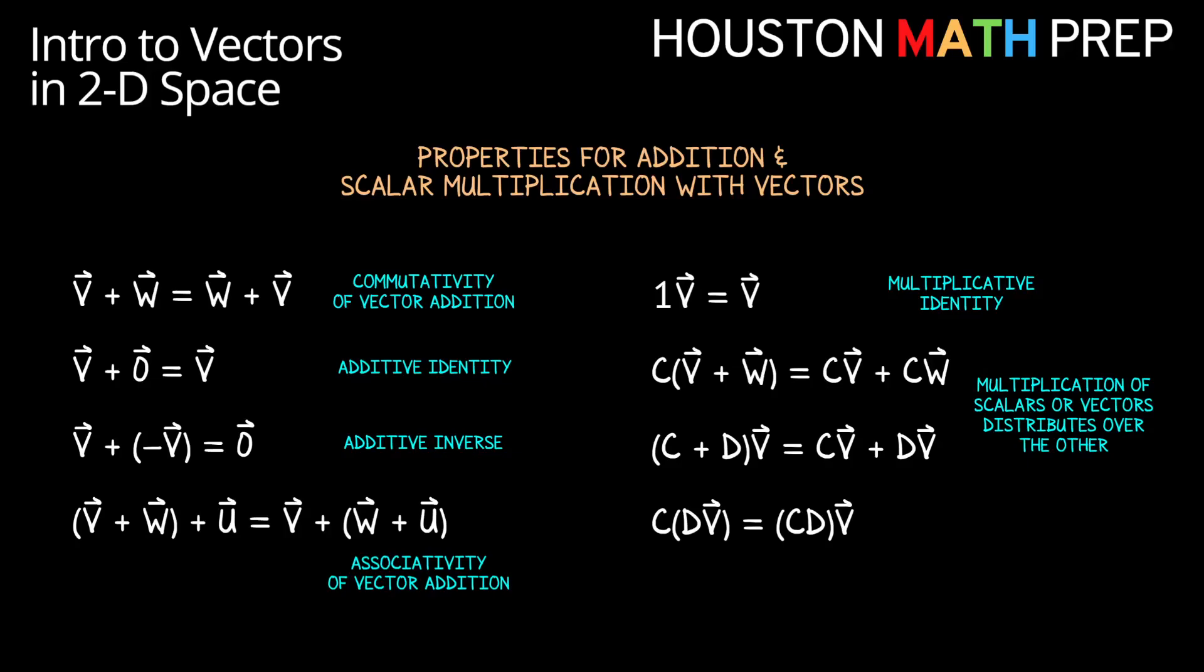The next two we'll go ahead and summarize together. This is a familiar idea like we have with real numbers. We're making sure that you know that multiplication distributes over addition, whether that's multiplication of a scalar distributing over the sum of two vectors or a vector distributing over the sum of two scalars.